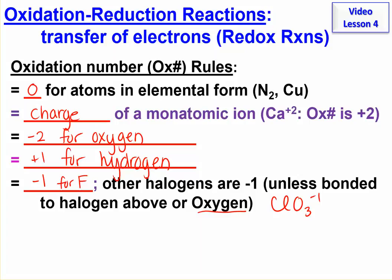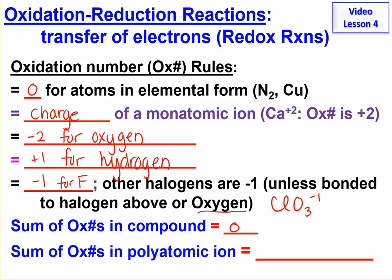So those are the rules for individual atoms. We need two rules for the whole thing. The sum of the oxidation numbers in a compound, this is a neutral compound, they must add up to zero overall. And for a polyatomic ion, they add up to the charge of the ion.